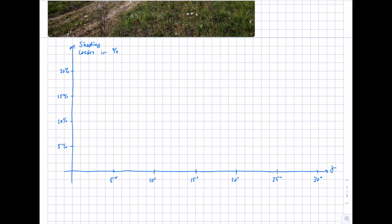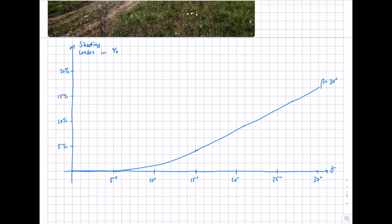For a tilt angle beta of 30 degrees, at a shading angle of 30 degrees, losses are relatively high. If the inclination angle is only 15 degrees, we get a different curve — at 30 degrees shading angle, the loss is about 12 percent, slightly smaller than the 30-degree tilt case.